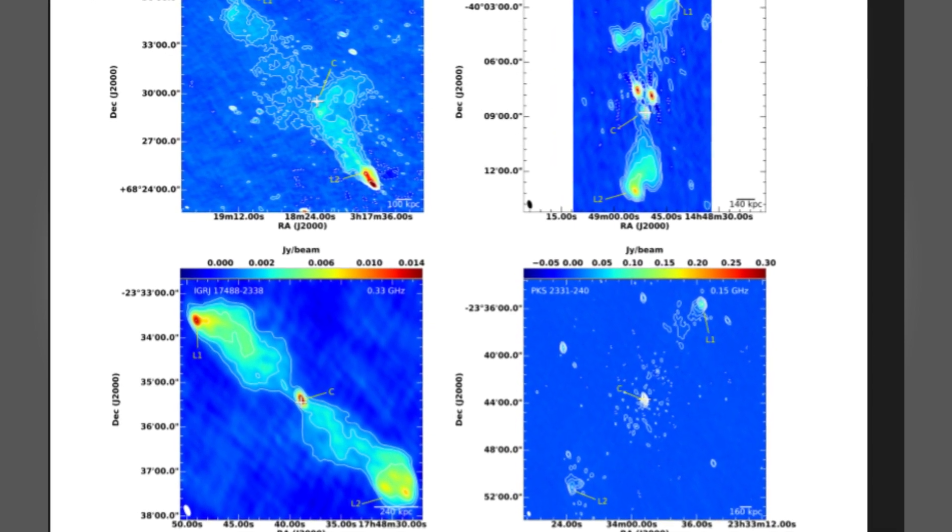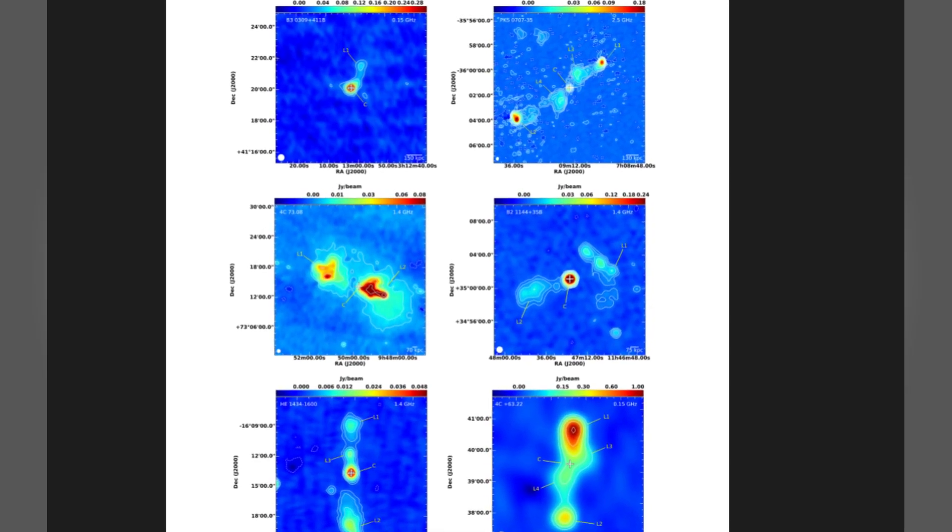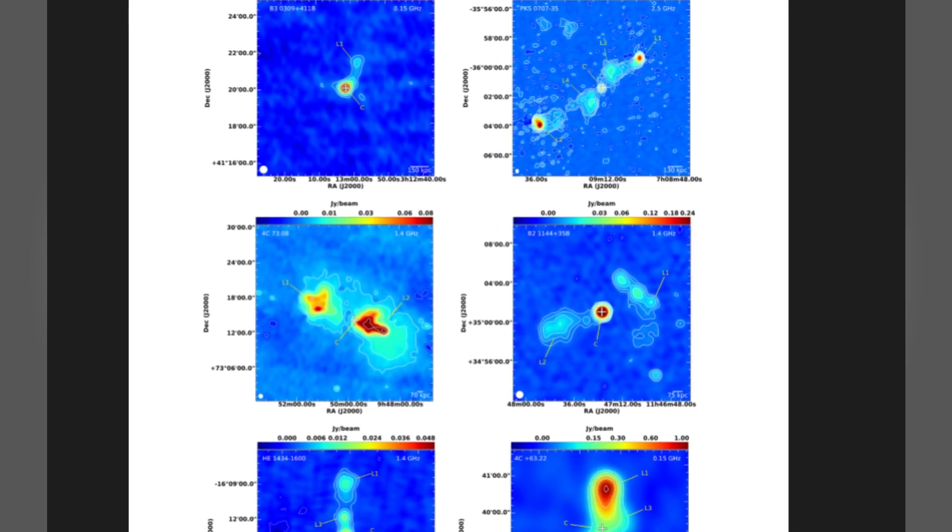A team led by scientists from the South African Radio Astronomy Observatory, SARAO, which operates Meerkat, will publish their findings in the monthly notices of the Royal Astronomical Society Journal.